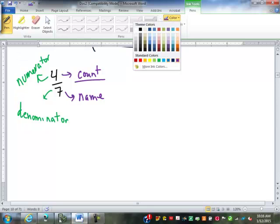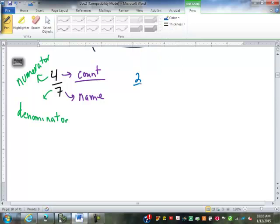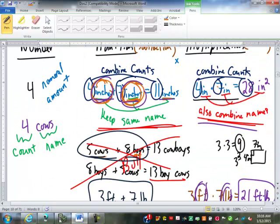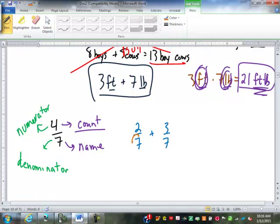If we go to add two sevenths plus three sevenths, somewhere around fourth grade, your teacher told you that when you add fractions, you must have a common denominator. That's no special rule for fractions. Whenever we add numbers, we must have the same name. Common denominator is just having the same name. Same teacher said that when you add fractions, you add the numerators. Two plus three is five, and you keep the common denominator. That's how we add any numbers. You combine the counts, you keep the same name.